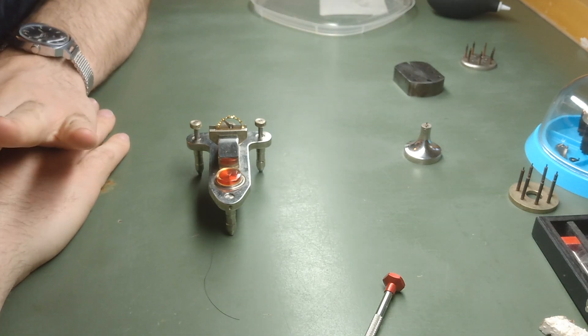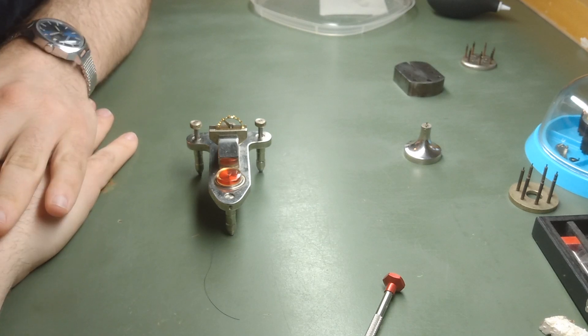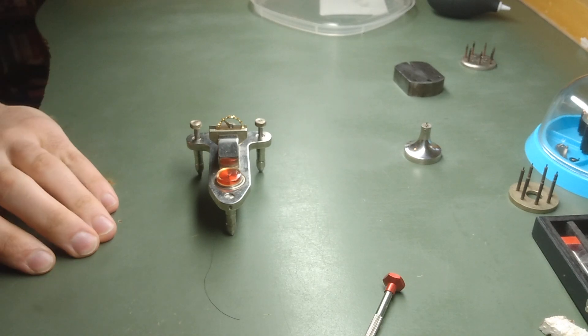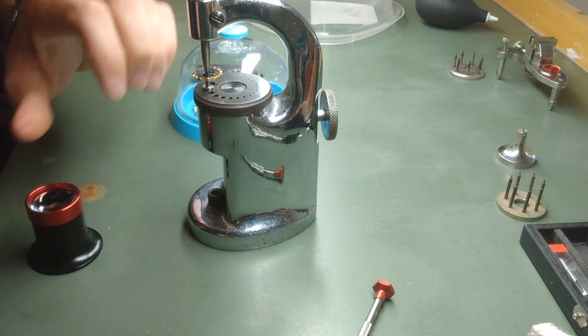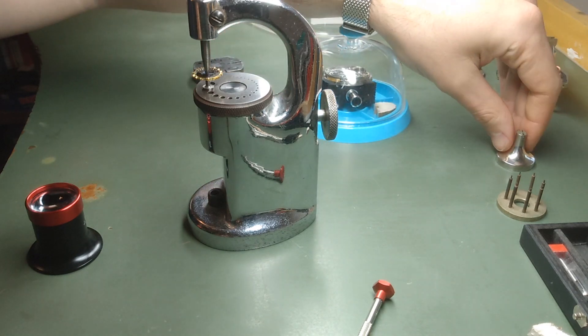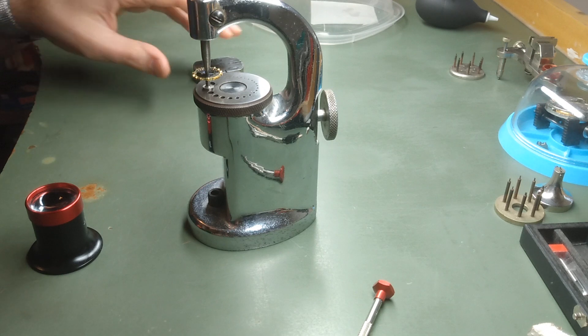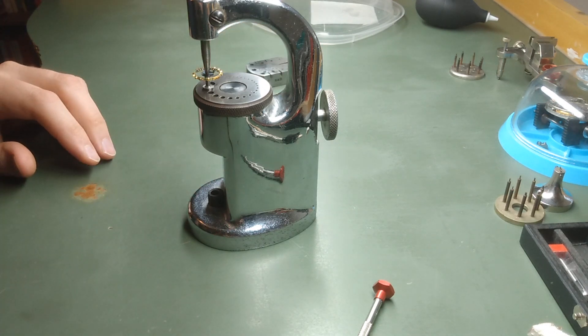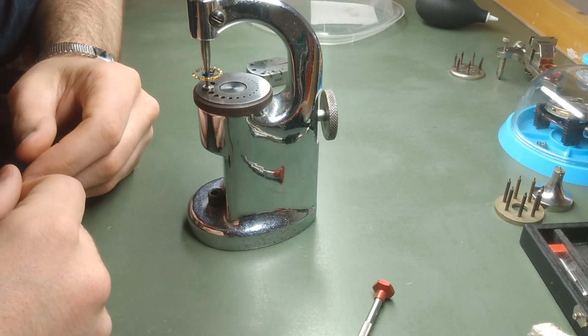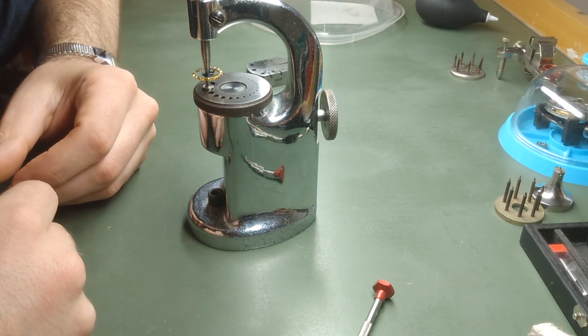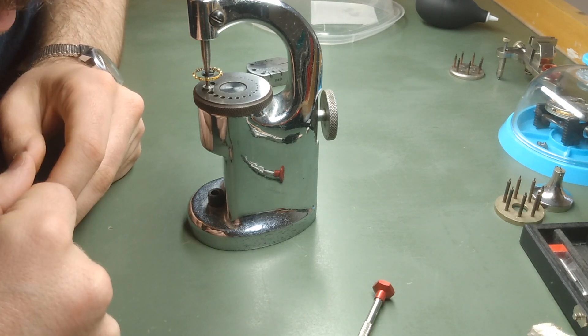So what we're going to do now is we're going to put the hairspring back on, we're going to clean the balance complete, then we're going to put it in the watch and see what our timing results are. Okay. That's the hairspring back on the balance. Now I'm going to put the watch roughly in beat. I'm not going to worry too much about the beat error because I know roughly where in beat is on this balance wheel, where this hairspring stud should be. I just want to check the rate right now. I just want to check, is it in regulatable territory with the regulator that I have?